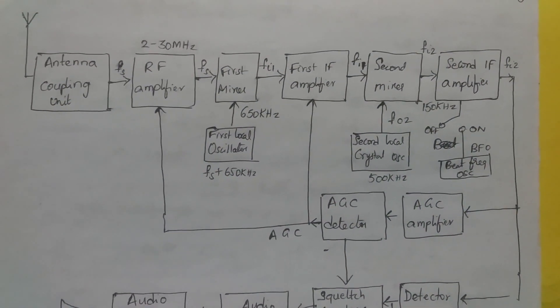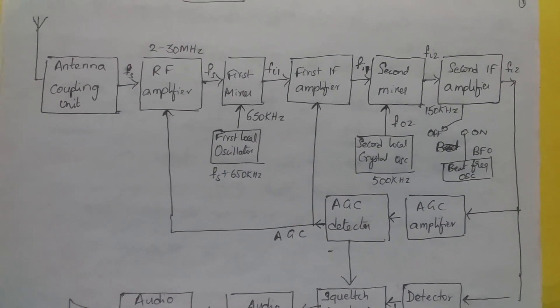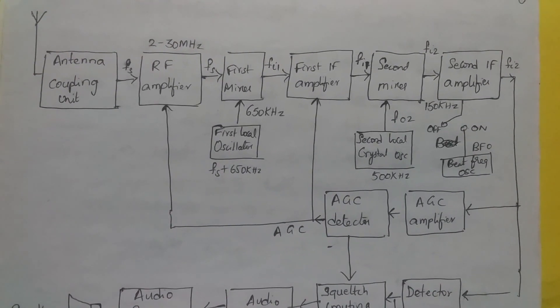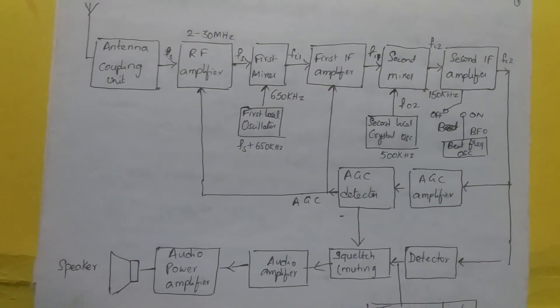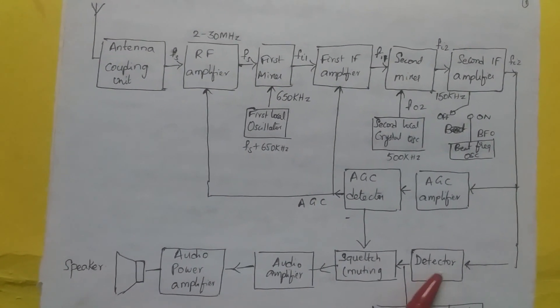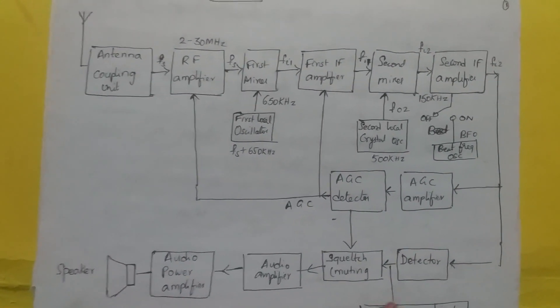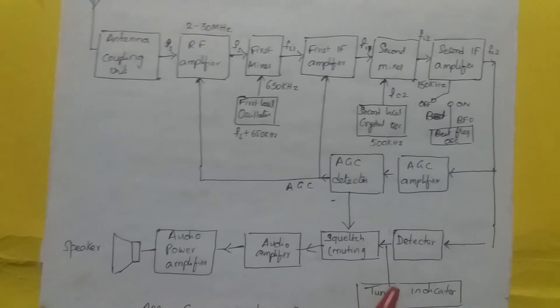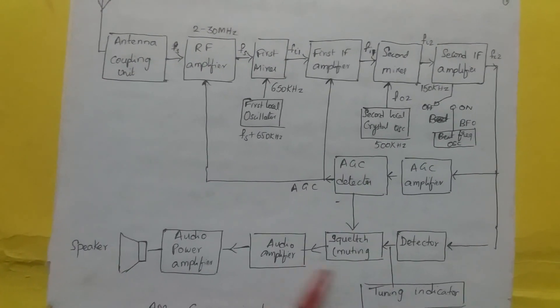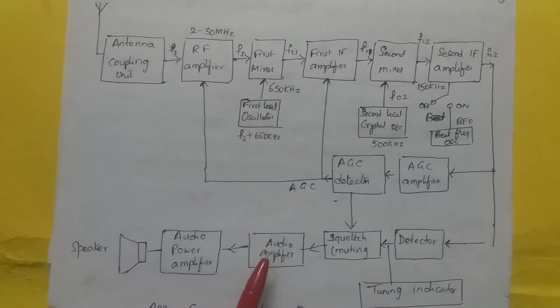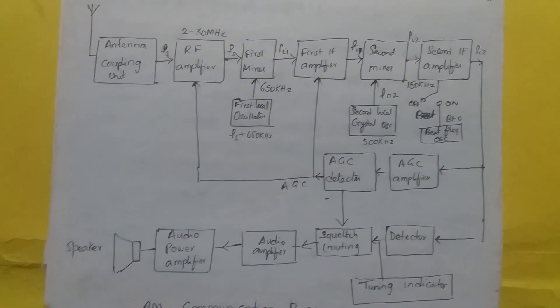The AGC amplifier sees to it that it provides constant output at AF amplifier. The squelch circuit cuts off the AF amplifier when there is no signal. The detector performs demodulation and retrieves the audio signal. The output of detector consists of RF amplifier signal, DC output and the original modulating signal. The modulating signal is passed to audio amplifier, further amplified and provided to the speaker. That's the basic operation.